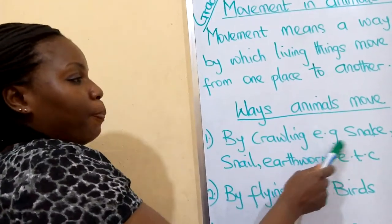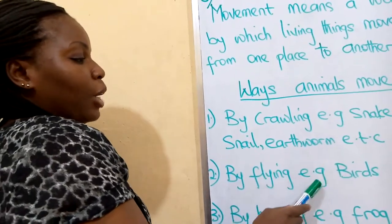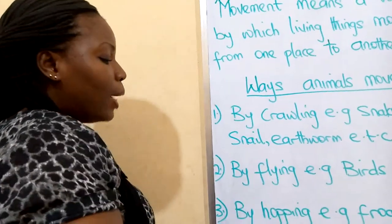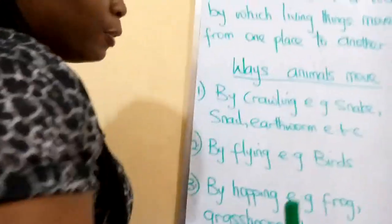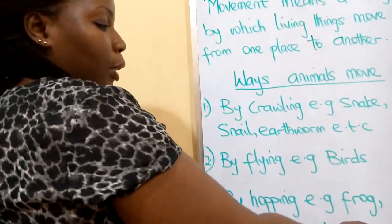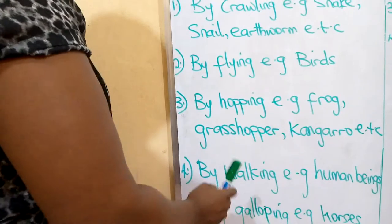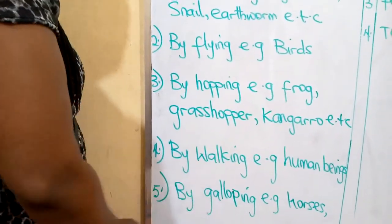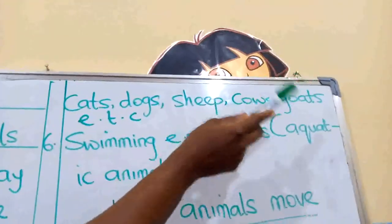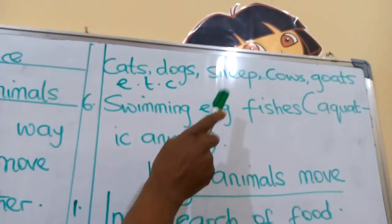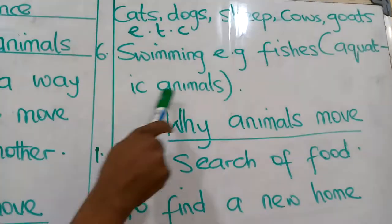Let's recap. Number one, we said by crawling — for example, your snake, your snail, your earthworm. They crawl. Number two: by flying — examples are birds. Number three: by hopping — your frog, your grasshopper, your kangaroo. Number four: by walking — we human beings walk. Number five: by galloping — examples are horses, cats, dogs, sheep, cows, goats. Number six: swimming — for example, your fishes in the river. All aquatic animals, those animals in the water, they swim.